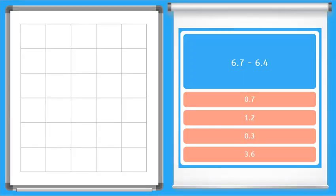Okay here is our first one. We have six and seven tenths and we're going to subtract six and four tenths. Remember we have to line up our place value. It's easiest to do that by paying attention to the decimal lining it up.